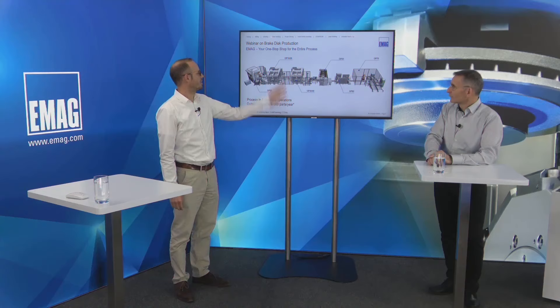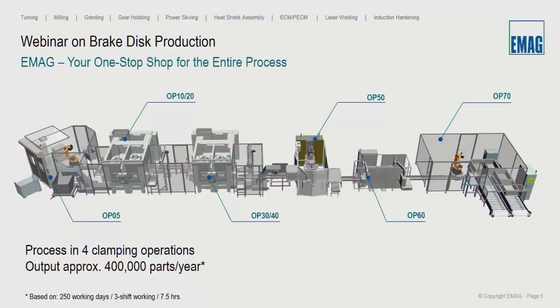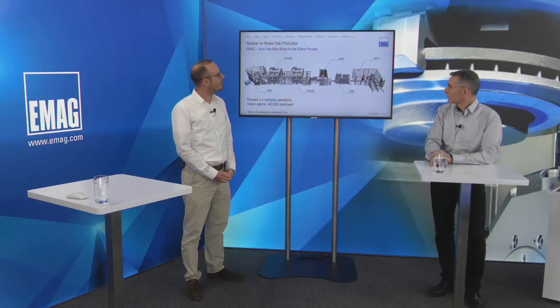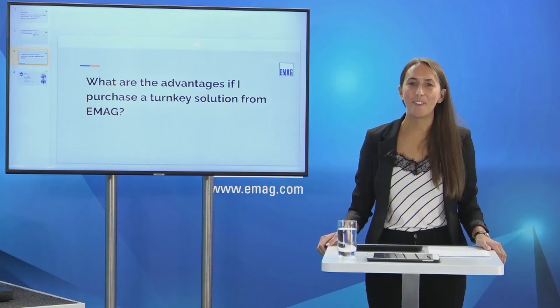Going out of the machine, the EMAC gantry system brings the machined brake disc to the next VSC 400 duo machine for op30 and op40, machining the finish and the bore. The disc then goes into the balancing machine, followed by a post-process measuring station with marking. At the end of the line, a robot cell picks the brake disc from the conveyor and places it into boxes. When a box is full, the operator moves it to the coating or painting area.